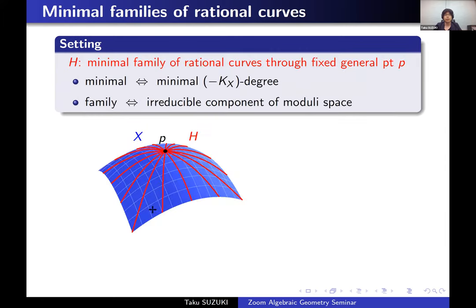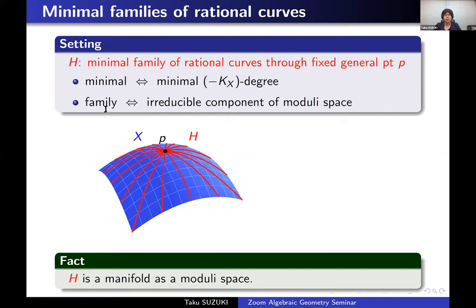In this talk, we consider rational curves passing through a fixed general point P. Let H be a minimal family of such rational curves. A minimal rational curve means a rational curve with minimal anti-canonical degree. And family means a reduced component of a moduli space. It is known that if P is a general point, then this family H is also a manifold — a smooth projective variety as a moduli space.